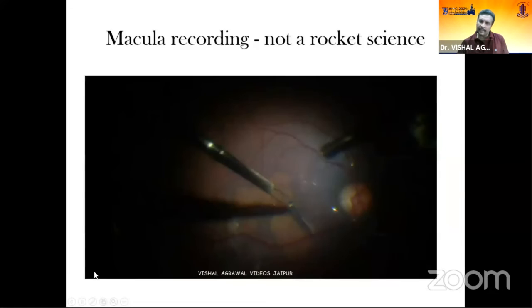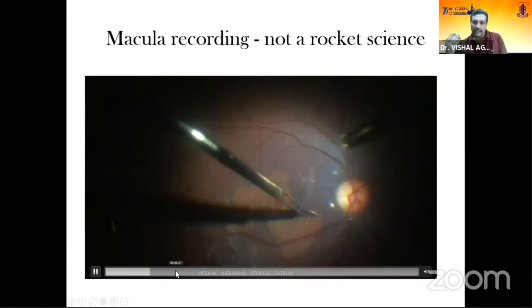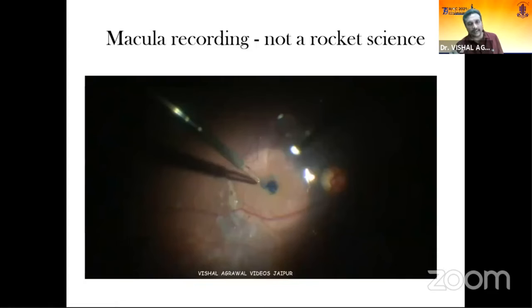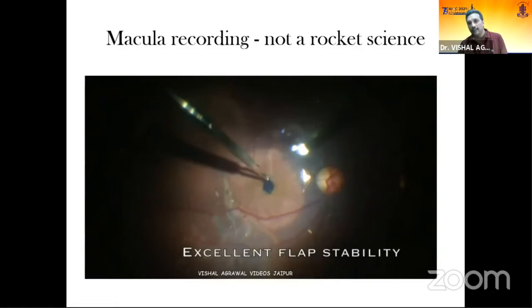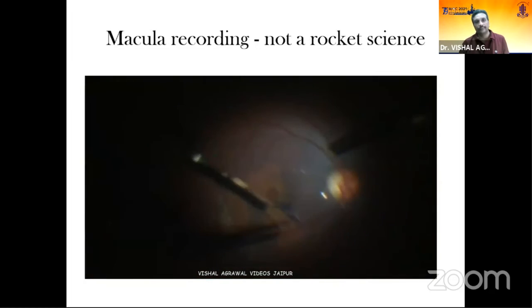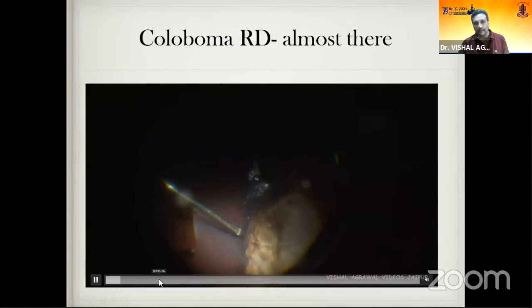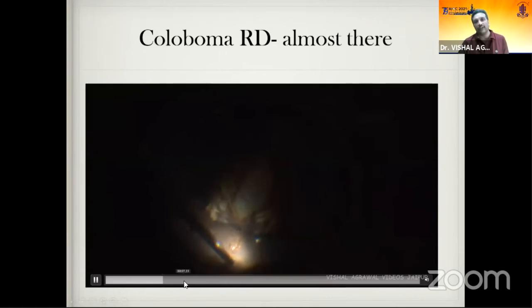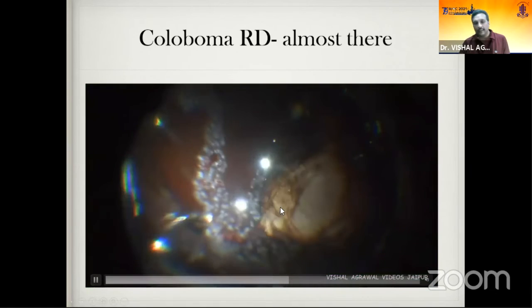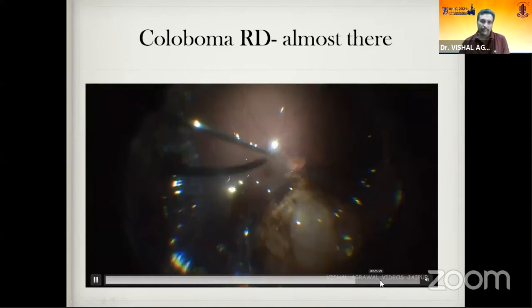Macular recording is not that difficult — most cameras give a good macular recording. One point to note: when you stain with BBG or brilliant blue you have to increase illumination intensity because the image becomes a little dark, so for optimal quality just increase the intensity while peeling. This coloboma RD case shows all reflections have been taken care of and details inside the coloboma are visible with the final adjustments.